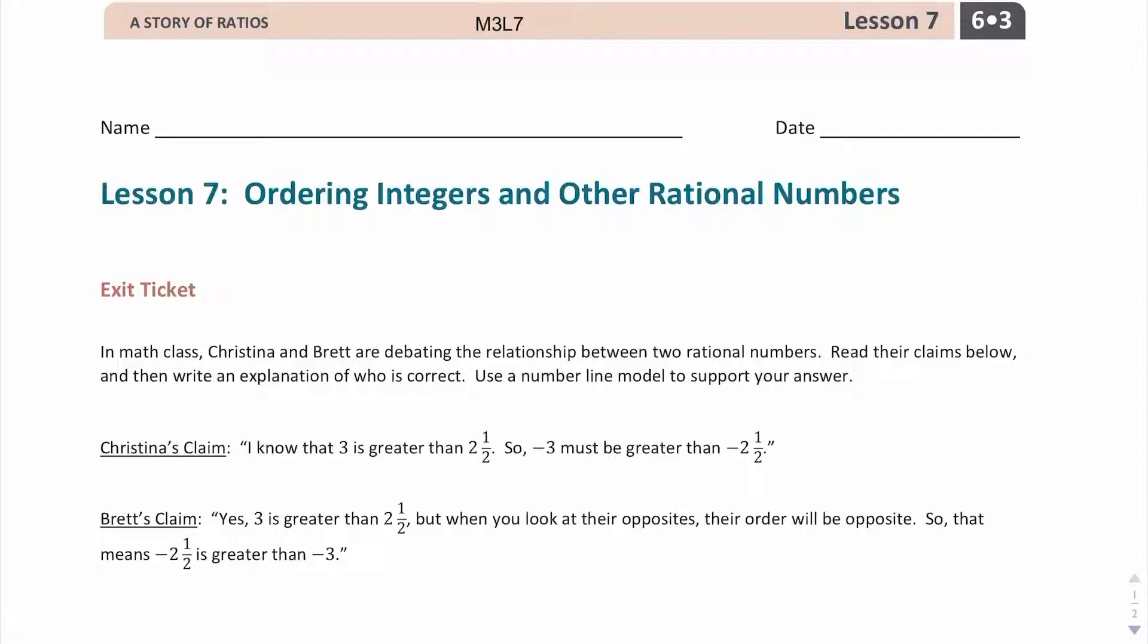First of all, Christina says, I know that 3 is greater than 2.5, so negative 3 must be greater than negative 2.5. Brett says, yes, 3 is greater than 2.5, but when you look at their opposites, their order will be opposite. So that means negative 2.5 is greater than negative 3.